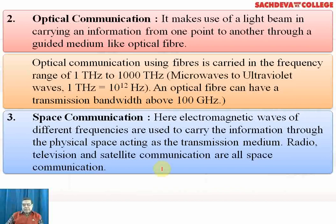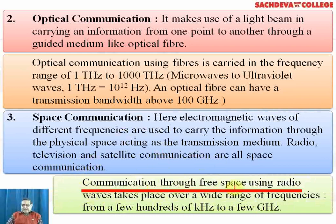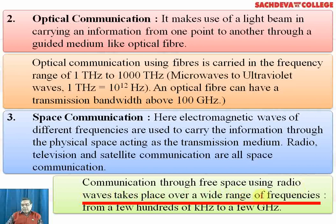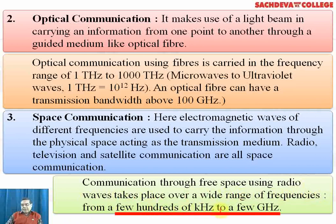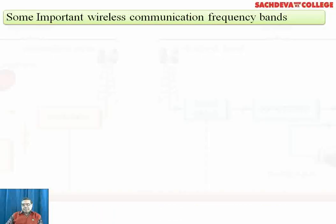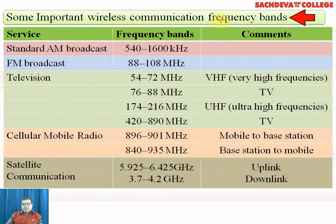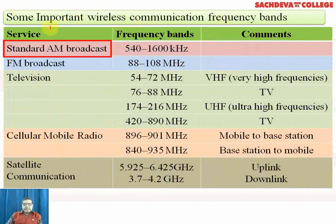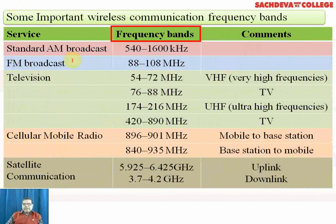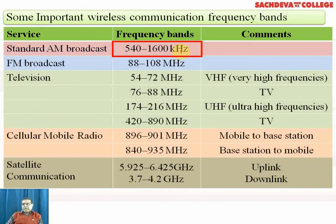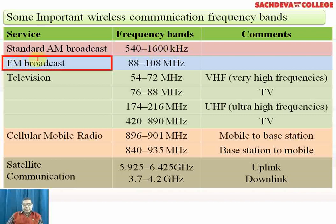Electromagnetic waves of different frequencies carry information through physical space as the transmission medium. Radio, television, and satellite communications are all forms of space communication using radio waves. Communication through free space using radio waves takes place over a wide range of frequencies — from a few hundred kilohertz to a few gigahertz. Standard AM broadcast has a frequency band of about 540 to 1600 kilohertz, and FM broadcast ranges from 88 to 108 megahertz.